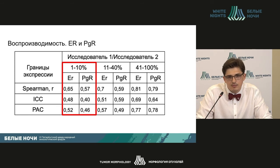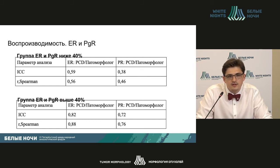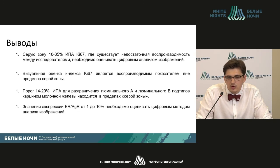Slightly better indicators were seen in the 11% to 40% group, where ratios approached 1. The data were also compared against digital image analysis, and we found low reproducibility between digital analysis and pathologists up to the 40% threshold. What can we recommend when such values appear in visual analysis — whether the pathologist is evaluating under a light microscope or viewing a scanned image?